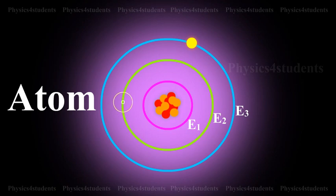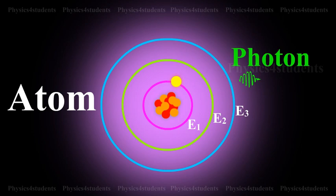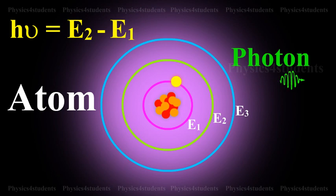An atom radiates energy only when an electron jumps from a stationary orbit of higher energy to an orbit of lower energy. If the electron jumps from an orbit of energy E2 to an orbit of energy E1, a photon of energy hν = E2 - E1 is emitted.